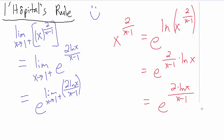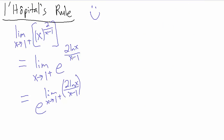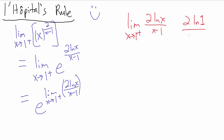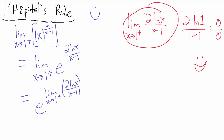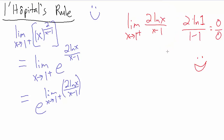Let's look at that inner limit separately: the limit as x goes to 1 from the right of 2 times the natural log of x, all divided by x minus 1. Direct substitution gives us 2 times the natural log of 1 divided by 1 minus 1. Natural log of 1 is 0, so the numerator is 2 times 0 which is 0, and the denominator is also 0. So we get 0 over 0, which means we can apply L'Hôpital's rule immediately.